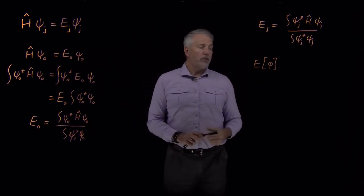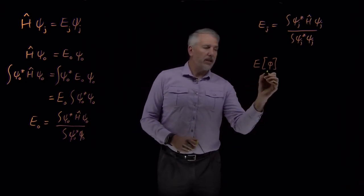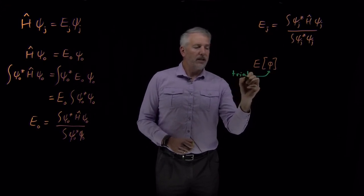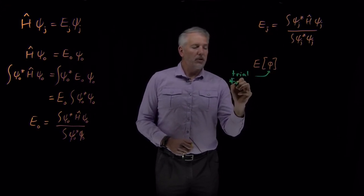What this suggests is I can calculate something that looks like an energy of any function, and this variable φ—I'm not writing ψ because I don't want to imply that it's the actual wave function. This ψ is something we'll call a trial function.